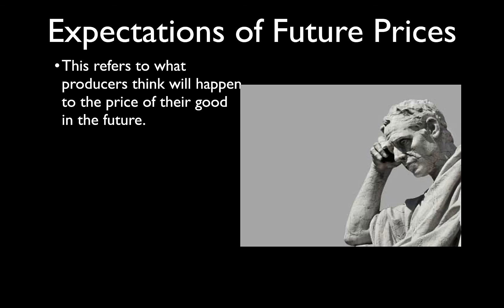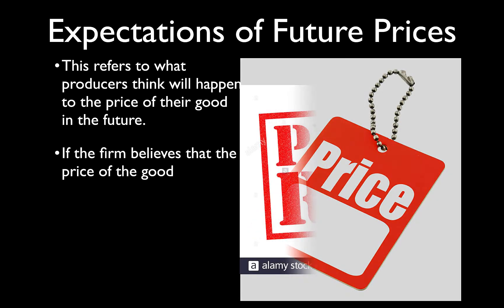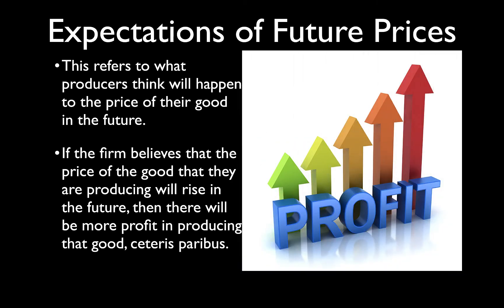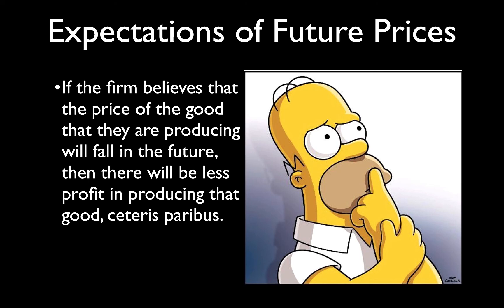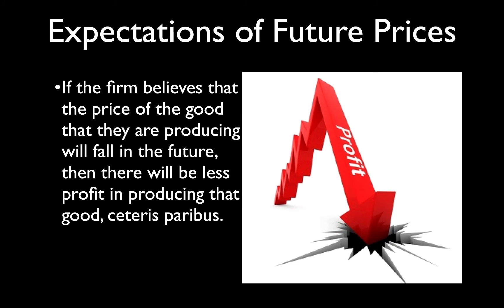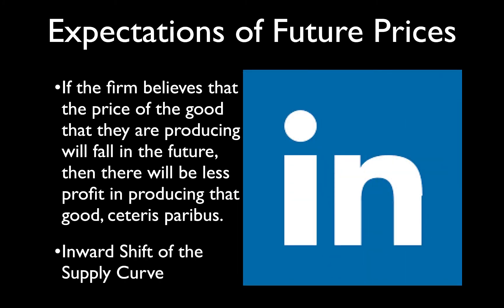Expectations of future prices refers to what producers think will happen to the price of their good in the future. If the firm believes the price of the good they are producing will rise in the future, there will be more profit per unit sold — the profit margin per unit sold increases — and as such there'll be more profit in producing that good, causing an outward shift in the supply curve. If on the other hand the firm believes the price will fall in the future, the profit margin per good sold will also fall, there will be less incentive to produce that good, and therefore there will be an inward shift in the supply curve today — even though this expected price fall may never occur.